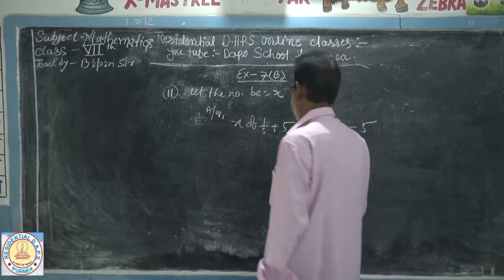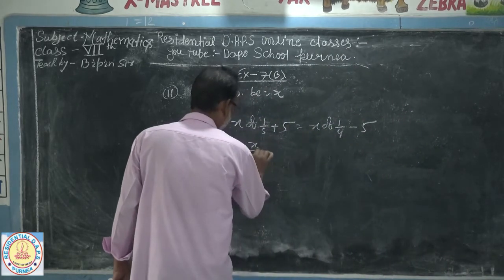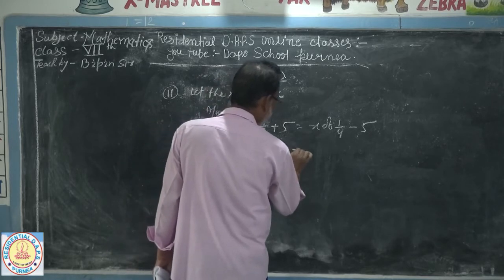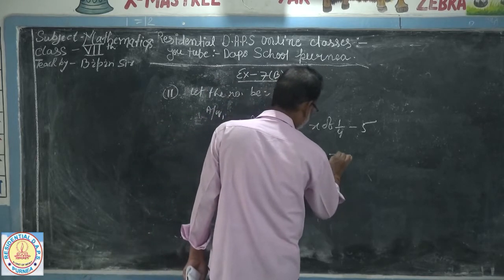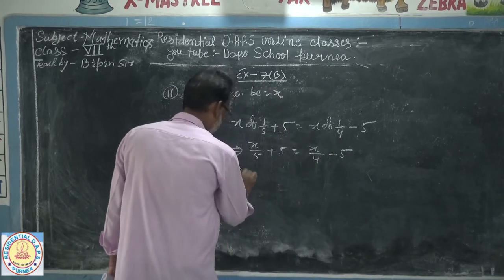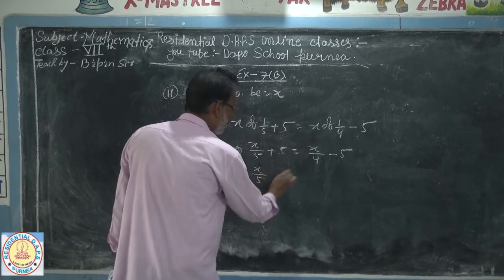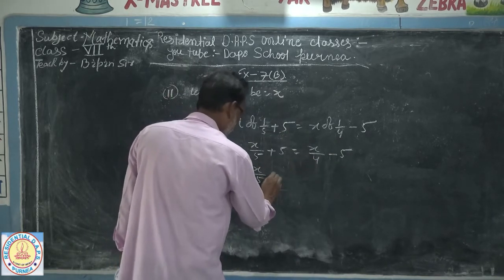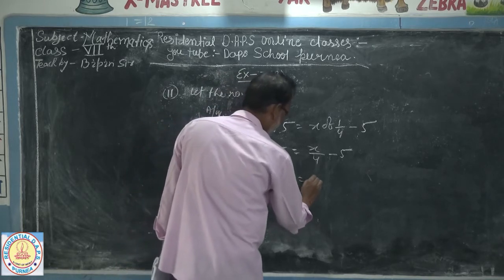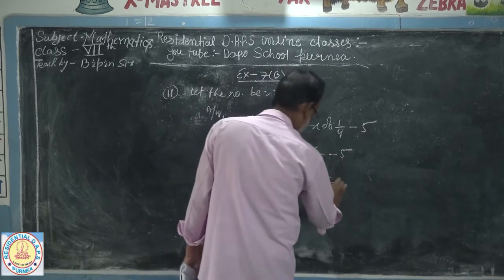So the equation is: x by 5 plus 5 is equal to x by 4 minus 5. Rearranging: x by 5 minus x by 4 is equal to minus 5 minus 5, that means minus 10.